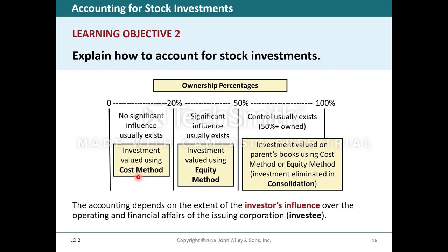Learning objective two: explain how to account for stock investments. In stock investments there are three categories. Zero to 20% — no significant influence usually exists; investment valued using the cost method. Twenty to 50% — investments valued using the equity method. And 50 to 100% — control usually exists; investment valued on the parent's books using the cost or equity method, and investment eliminated in consolidation. The accounting depends on the extent of the investor's influence over the investee.